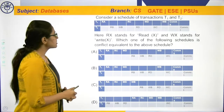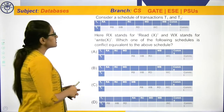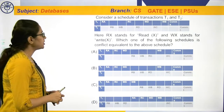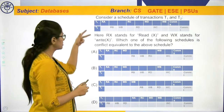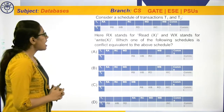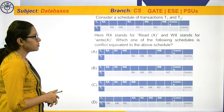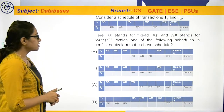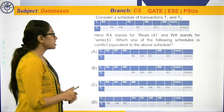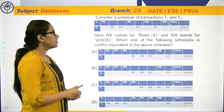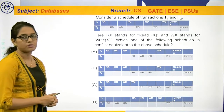What is the question? Consider a schedule of transactions T1 and T2. This schedule is given. Here Rx stands for read x and Wx stands for write x. Which one of the following schedules is conflict equivalent to the above schedule?